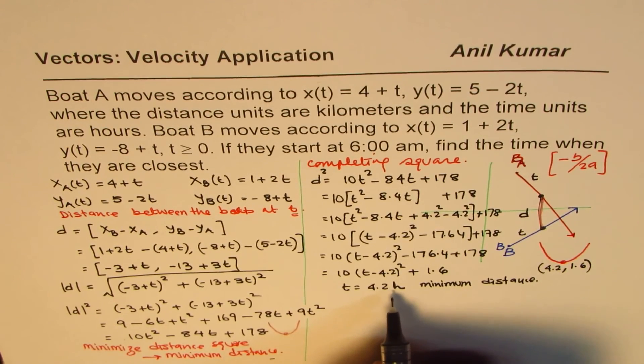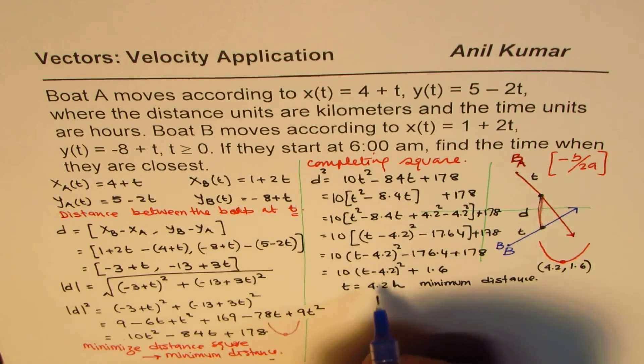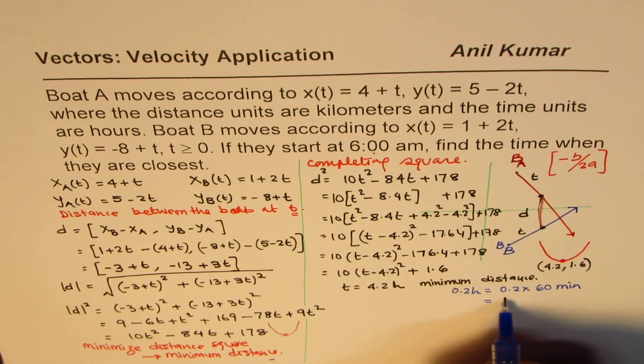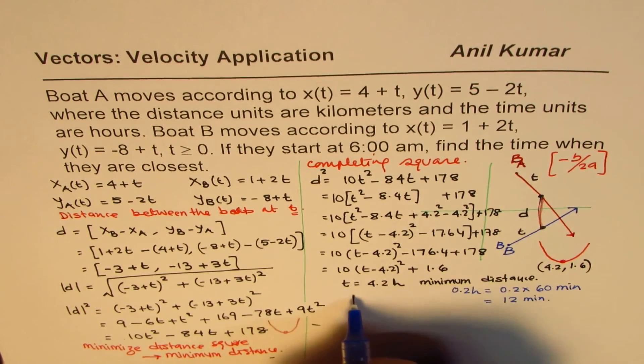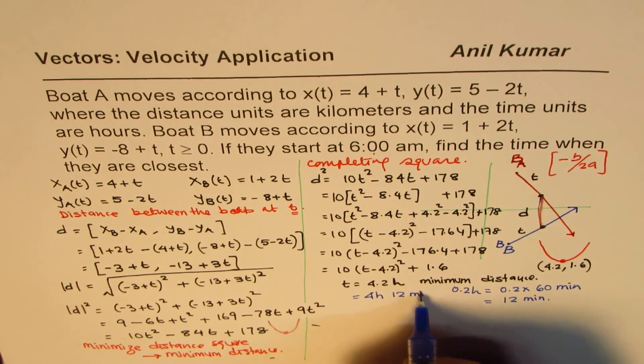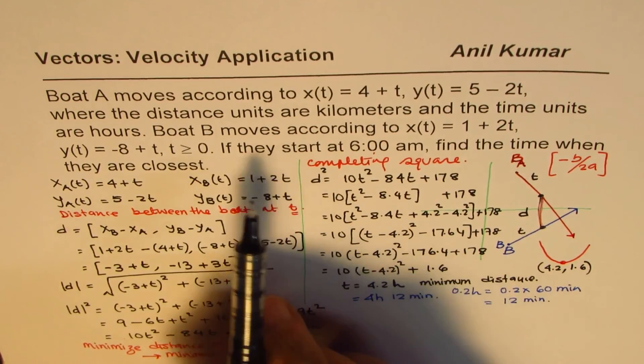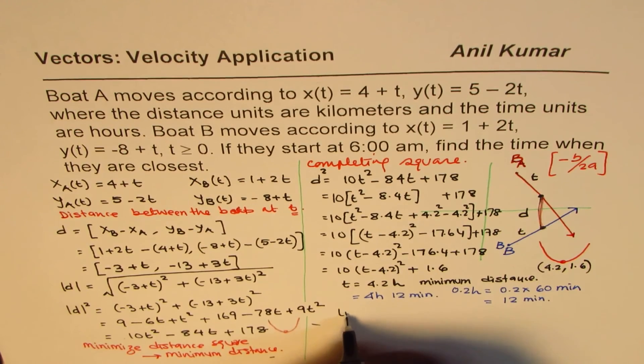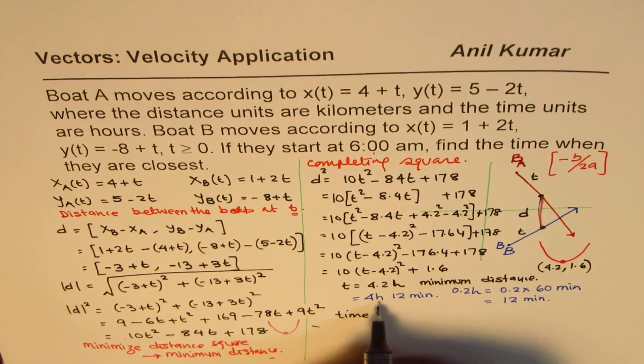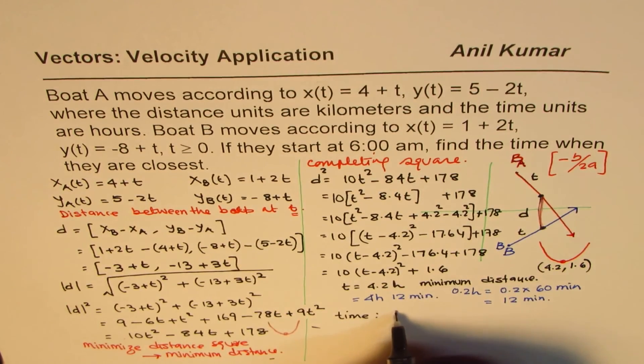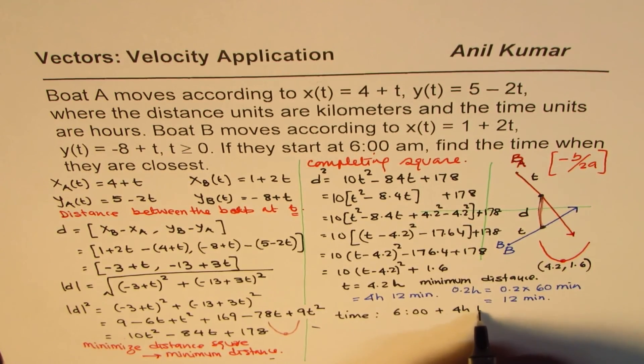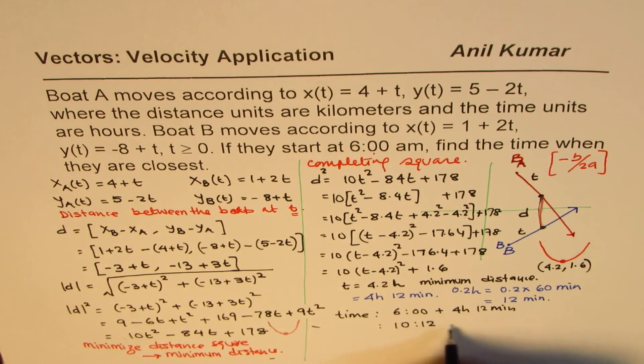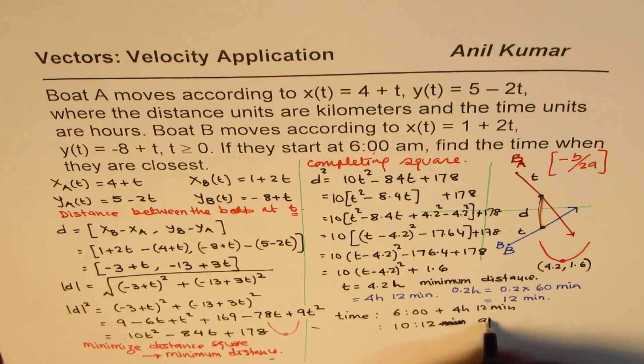Now, when I say 4.2 hours, what it really means. So 0.2 hours is 0.2 × 60 minutes, which gives me 12 minutes. So we could write this as 4 hours 12 minutes. Does it make sense? The question is, if they start at 6 AM, find the time when they are closest. We need to find the time. So the time will be 4 hours 12 minutes after 6. So it would be 6 AM plus 4 hours 12 minutes. So that gives us time as 10:12 AM.